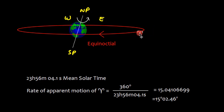The first point of Aries will appear to be moving in opposite direction. The path traced will be at the equinoctial. Equinoctial is the projection of the equator and it takes 23 hours 56 minutes and 4.1 seconds mean solar time. This is the true rotational period of earth.